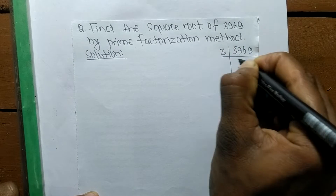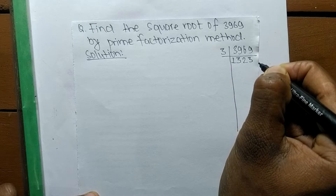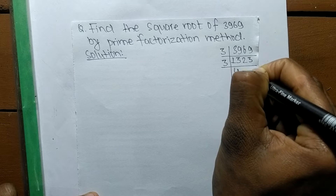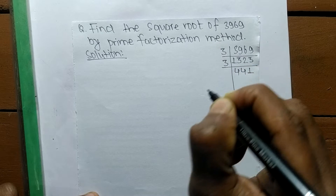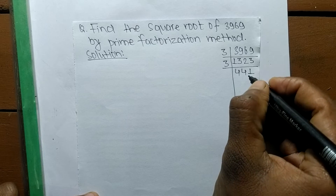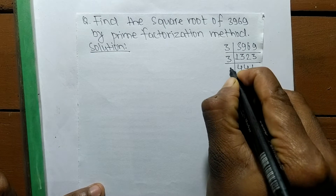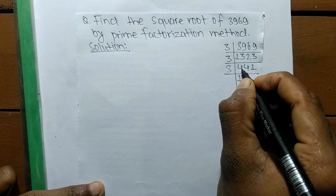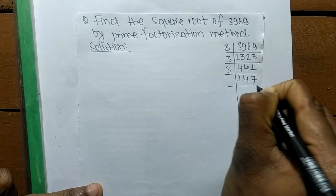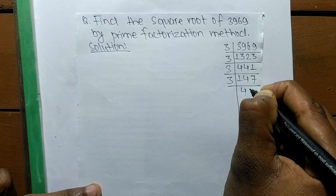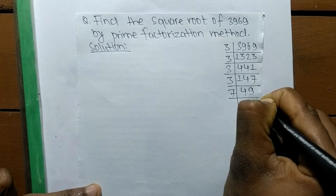We divide 3969 by its prime factors. Dividing by 3 repeatedly: 3 goes into 3969, then into 1323, then into 441, then into 147, then into 49. Finally, 7 times 7 equals 49, so 49 divides by 7 to give 7. So the prime factors of 3969 are 3, 3, 3, 3, 7, and 7.